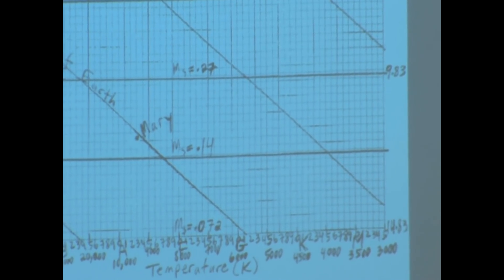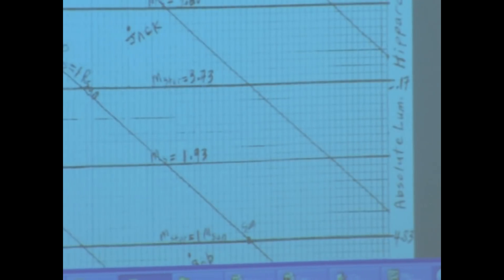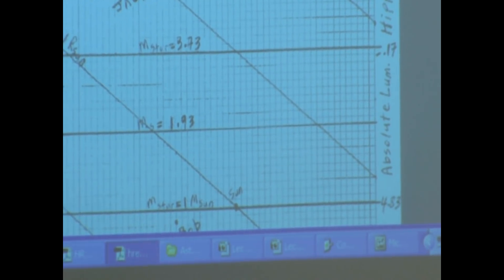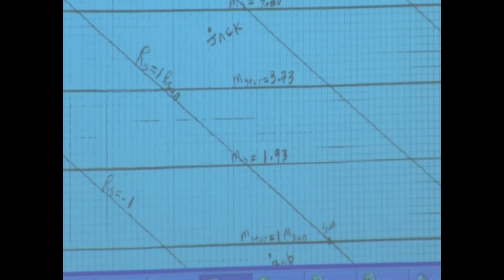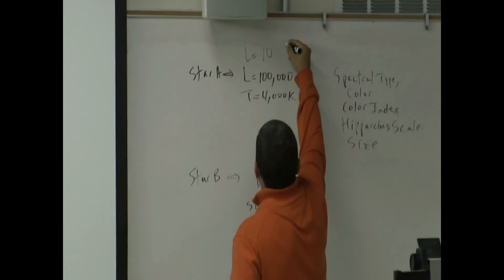Until you get to a hundred thousand. Where's a hundred thousand? What's a hundred thousand in terms of scientific notation? Ten to the power five.